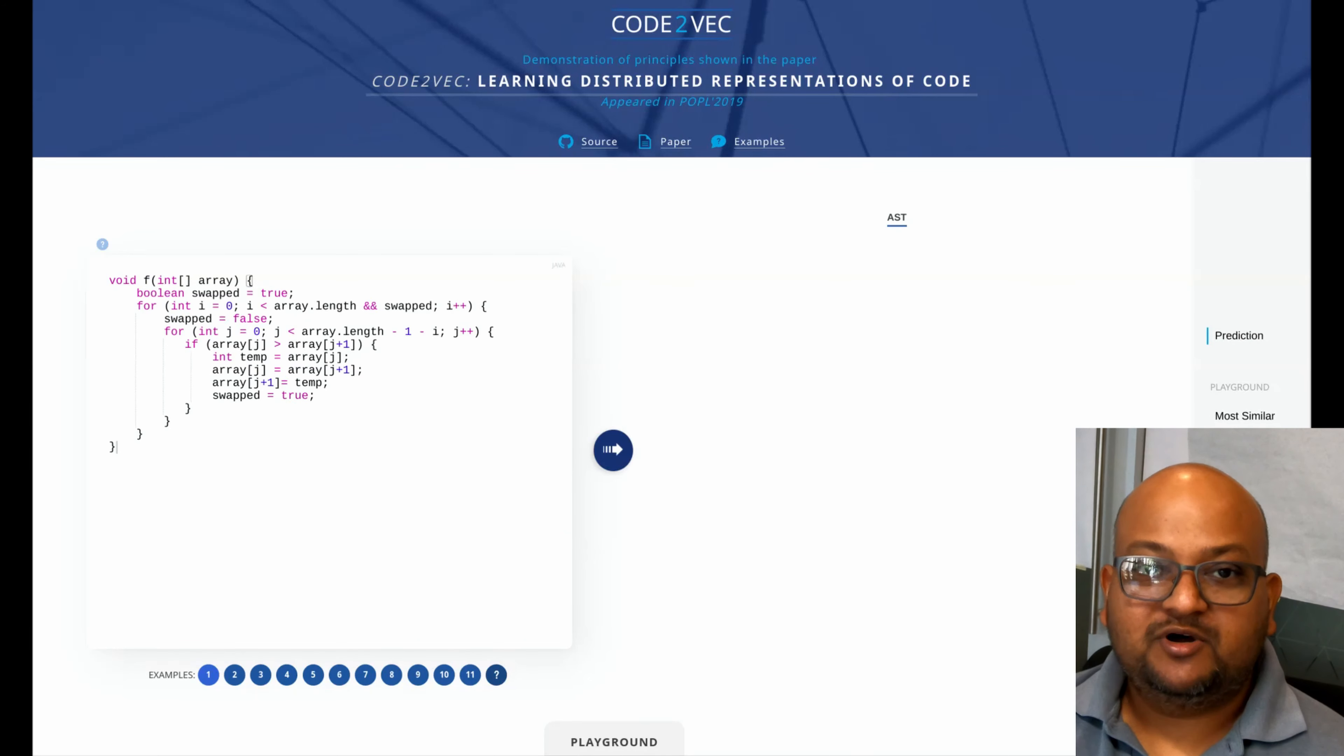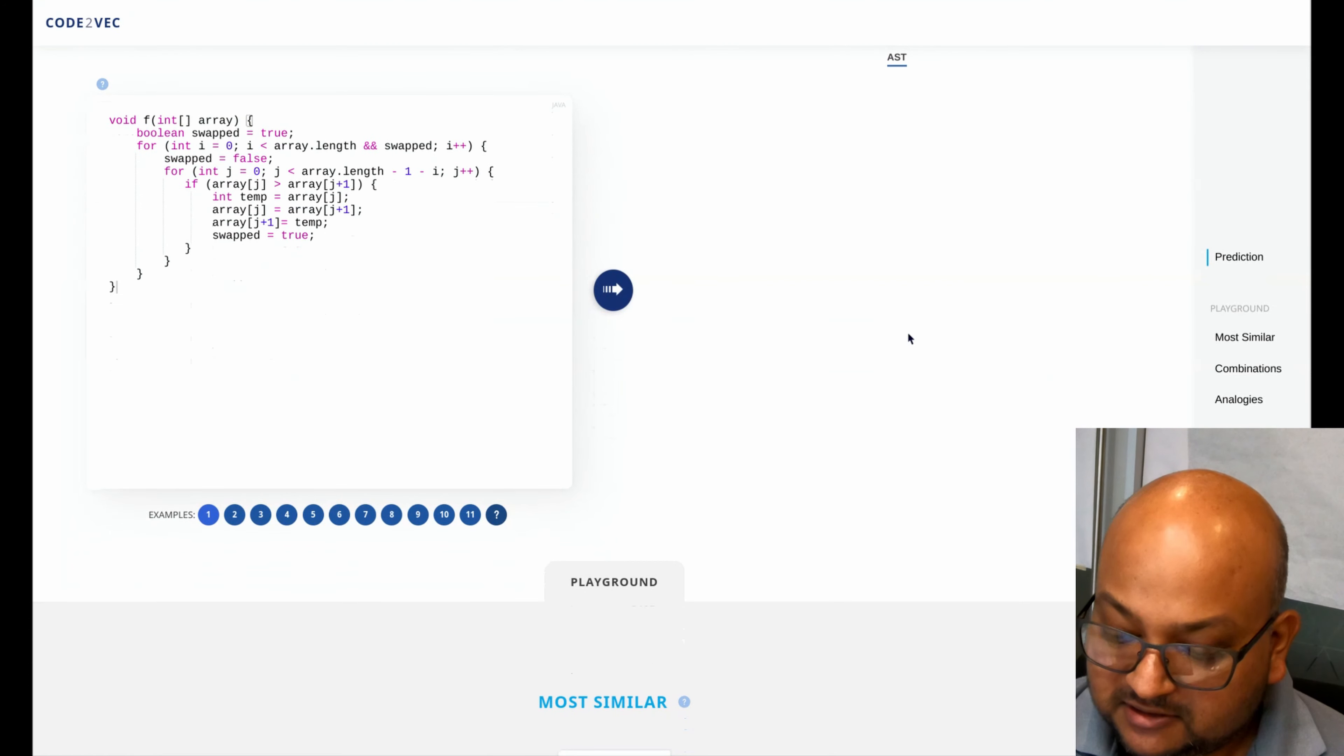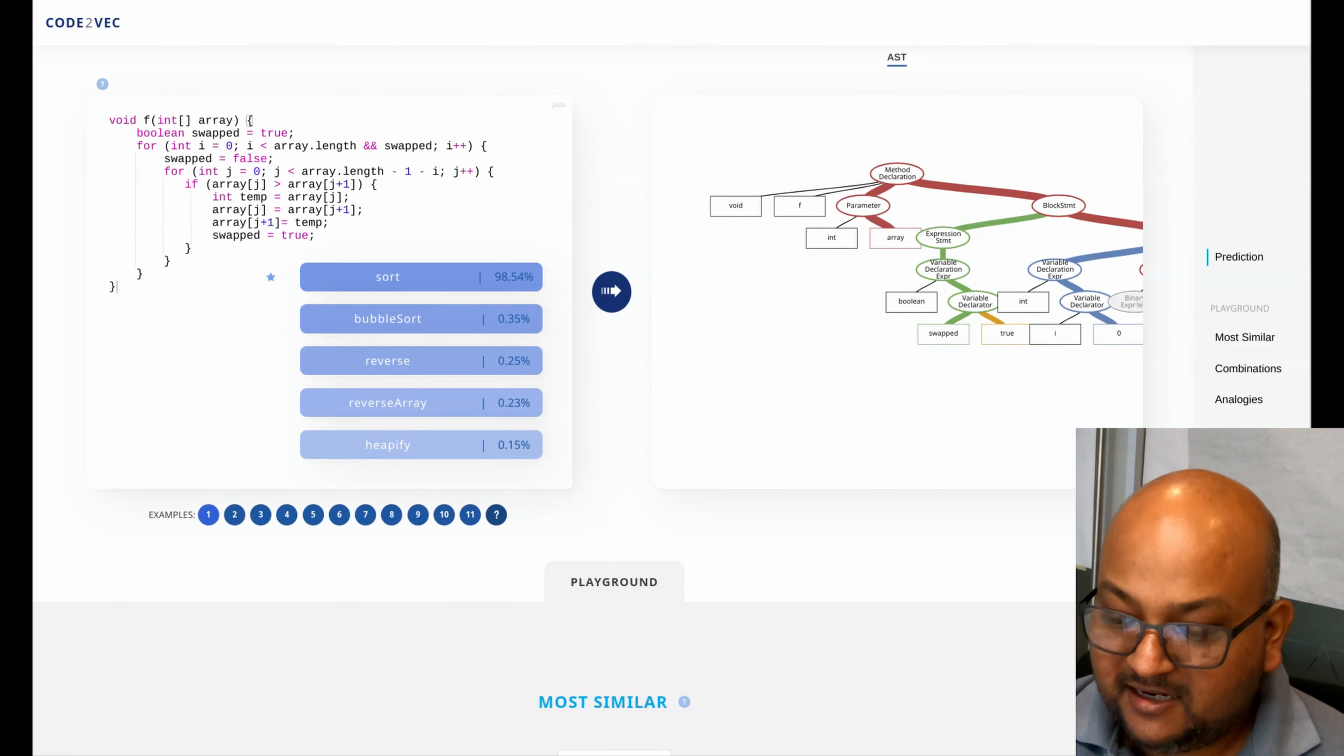The authors have actually put up their model on a website so we can see it in action. Let's look at some examples. If you look at this very first example, what does this look like? This looks like an array being sorted using bubble sort and indeed sort comes up as the highest probability name.